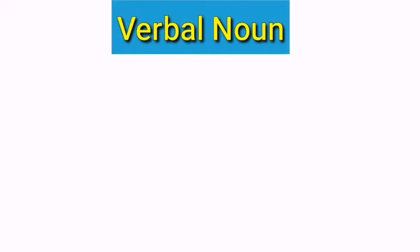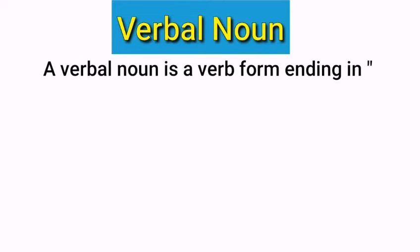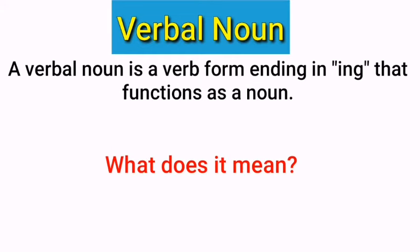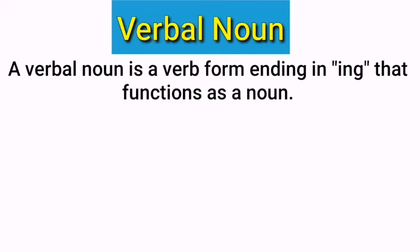A verbal noun can be defined as a verb form ending in -ing that functions as a noun. Simply, it means that a verbal noun refers to a verb form which functions as a noun in a sentence. It is also called a gerund. When the -ing form of a verb functions as a noun in a sentence, then it is called a verbal noun.